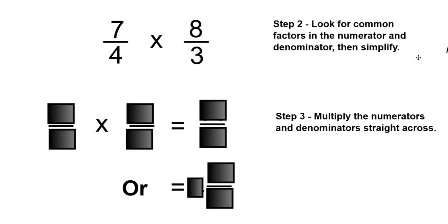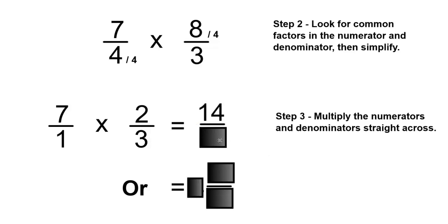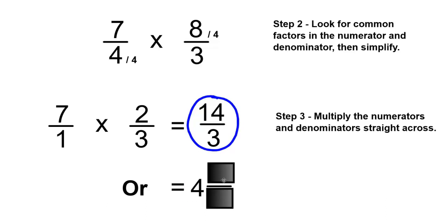Look for common factors in the numerator and denominator, then simplify. 8 can be divided by 4, as well as 4 can be divided by 4. The 7 and the 3 will stay the same. 8 divided by 4 is 2, and 4 divided by 4 is 1. Step 3: multiply the numerators and denominators straight across. 7 times 2 is 14, and 1 times 3 is 3. So your final answer as an improper fraction will be 14 over 3. If you want to make this a mixed number, your answer will be 4 and 2 over 3.